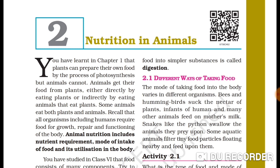Animal nutrition includes nutrient requirement, mode of intake of food, and its utilization in the body — yani nutrition ki zarurat, khane ka tariqa, aur body issay kaise utilize karti hai, in sabhi baaton ka samaavesh hota hai.